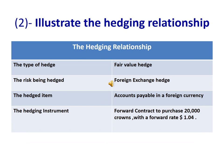For the hedging relationship: the type of hedge is a fair value hedge, because the company tries to reduce the exposure to changes in the fair value of a specific liability already recognized in the balance sheet, which is accounts payable in a foreign currency. The risk being hedged is foreign exchange risk. The hedged item is accounts payable in a foreign currency, and the hedging instrument is a forward contract to purchase 20,000 crowns at a forward rate of 1.04.